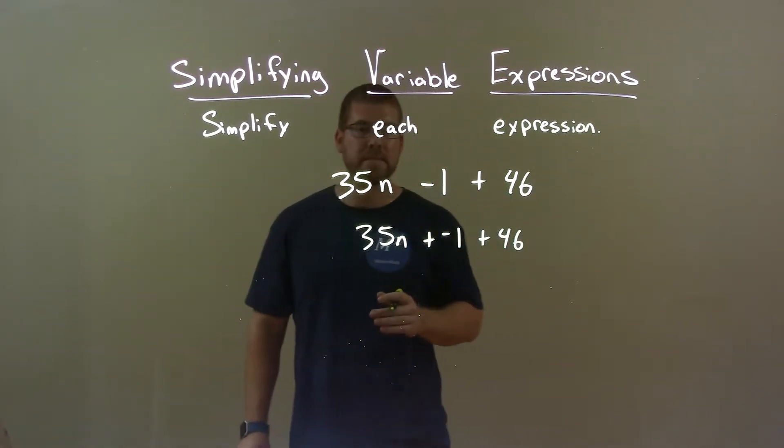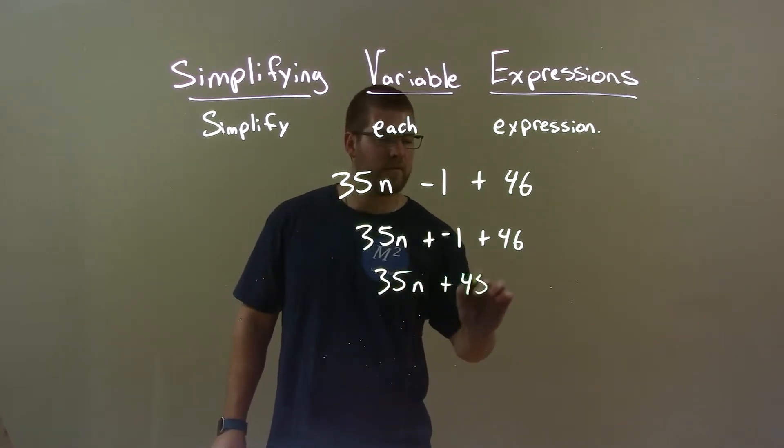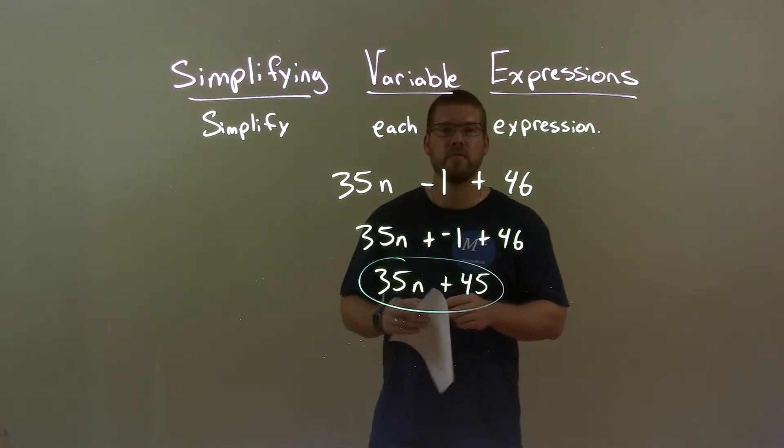Negative 1 plus 46 is 45. So we have 35n plus 45, and there we have it. Our final answer: 35n plus 45.